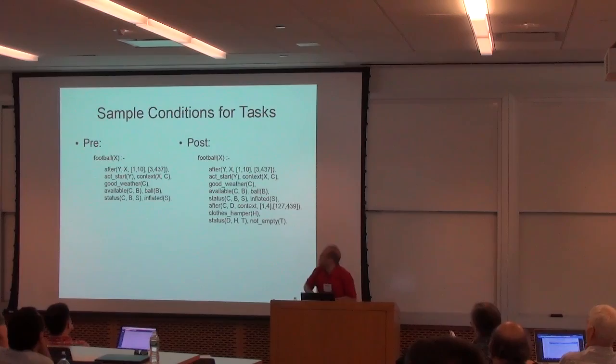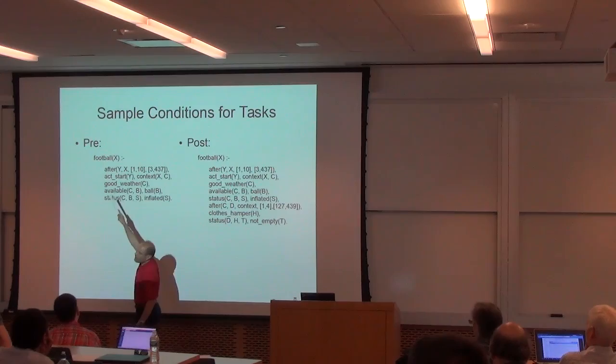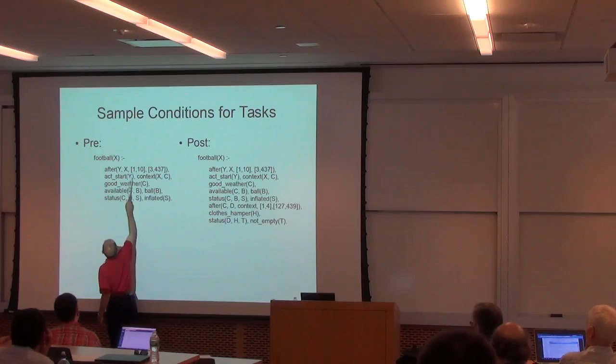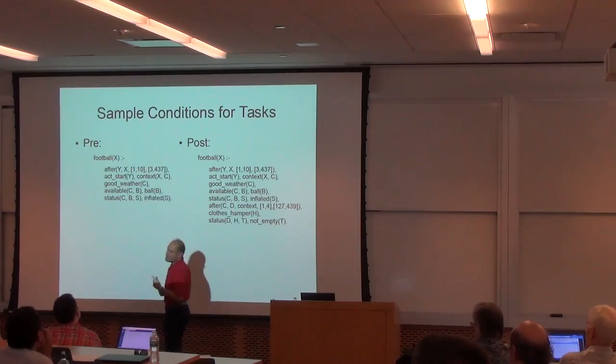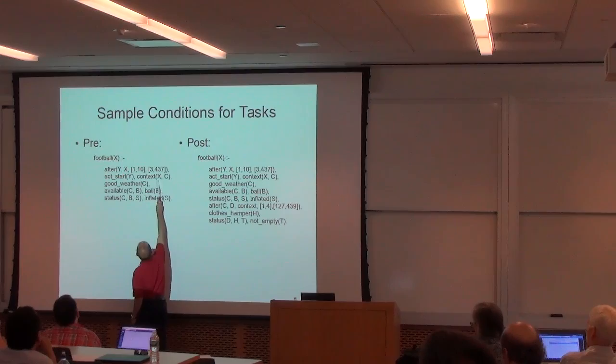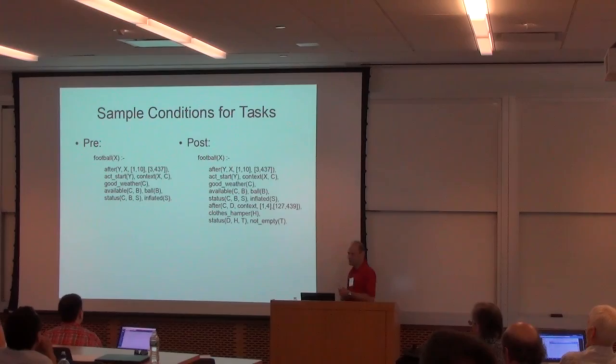In this sample case, using several cases of this kind, for instance we learned that at a moment in time X, the person plays football only if before that time there was the starting of the process between one and ten steps before and between three and four hundred thirty-seven minutes before. That action football takes place in context C when the weather is good and a ball is available and its status is inflated. Of course, this is an example just to show the formalism and what can be learned.